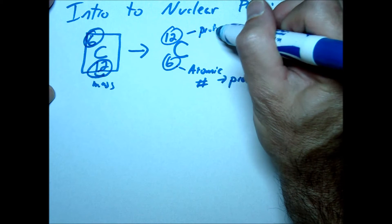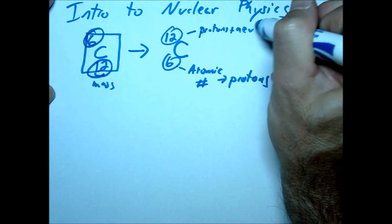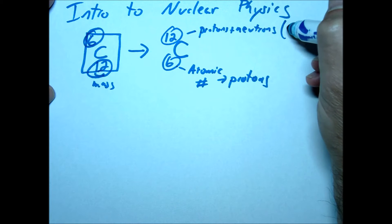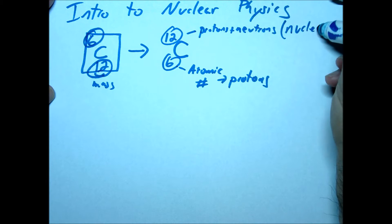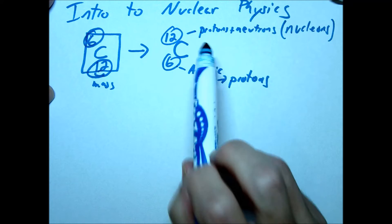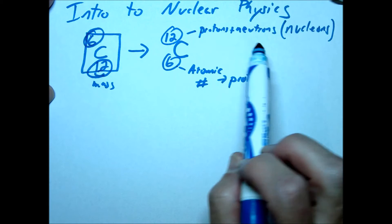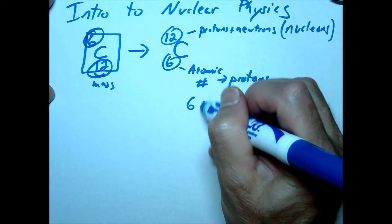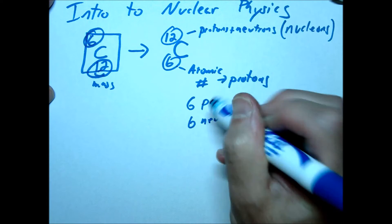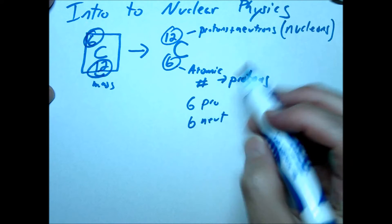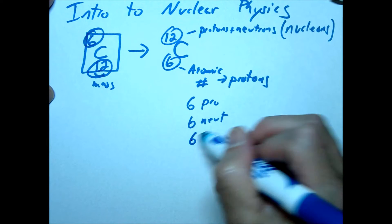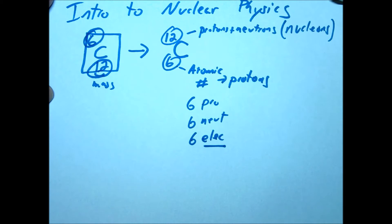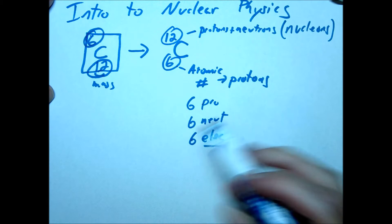The protons plus neutrons — when I say nucleons, that means anything in the nucleus, which means both protons and neutrons. So in this particular atom, carbon, we would say this atom has 6 protons, 6 neutrons, because 6 plus 6 has to equal 12. And if it's a neutral atom, we'd say it has 6 electrons — unless told otherwise, you assume it's a neutral atom.